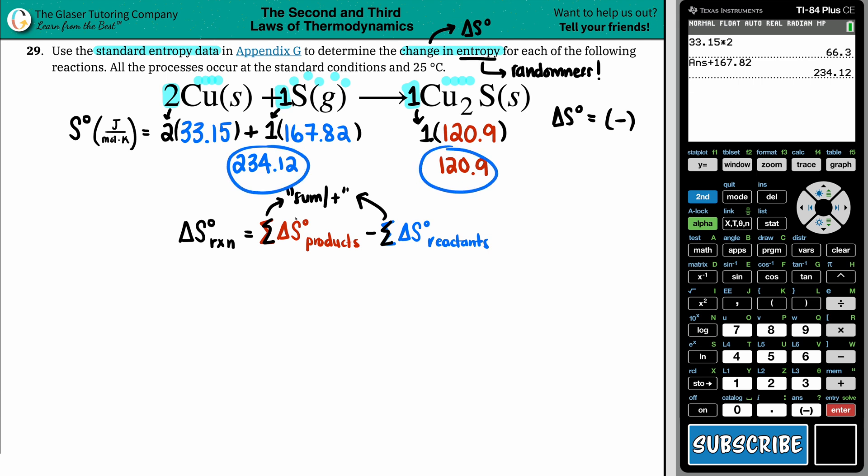These are my new values that I'm going to plug into my equation. So here we go. Delta S for the whole entire reaction would be products minus reactants. So 120.9 minus 234.12.